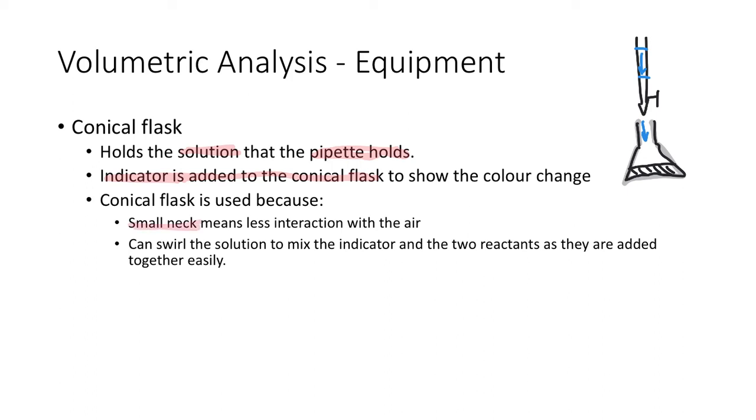Conical flask is used because the small neck means less interaction with the air, and you can swirl the solution to mix the indicator and the two reactants as they are added together. You grab it by the neck and swirl it around in a circular motion to mix it as you're dropping the stuff in.